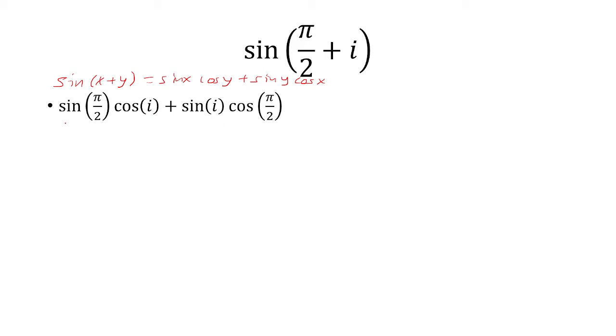Now we know that sine of pi over 2 is 1, so that leaves us with cosine i. And cosine of pi over 2 is 0, so this term disappears. That leaves us with cosine i.